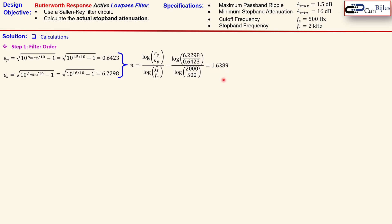Now in order to actually realize our circuit we need to have an integer value. So the first order will be not sufficient so we need to go to the second order. So that means we need to have n equals 2.